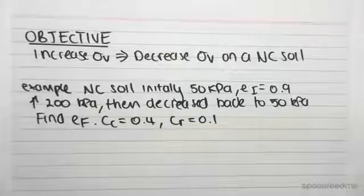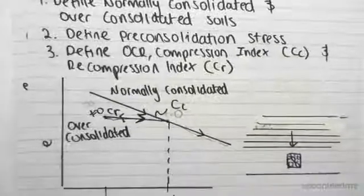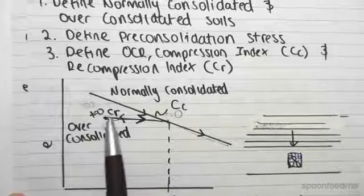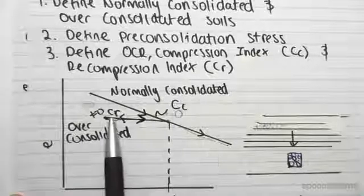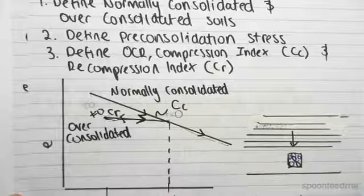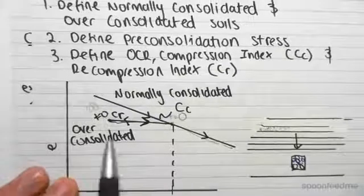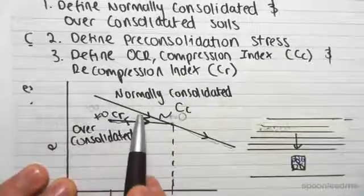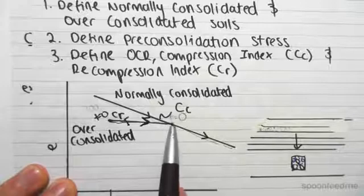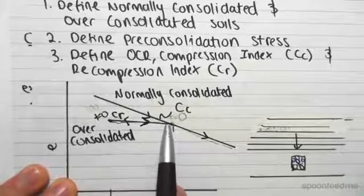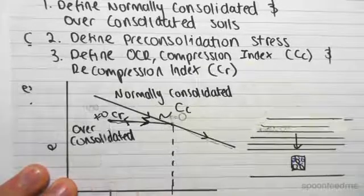If I take us back to the diagram we developed in the very first video, so far we've seen along this line, we've seen a combination of this line and this line. The final example we're going to do now is when we start up here and we come to a point of pre-consolidation stress and then we decrease to come up here.